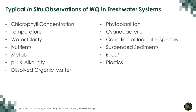Typical in-situ observations of water quality in freshwater systems include chlorophyll concentration, temperature, water clarity, nutrients, metals, pH and alkalinity, dissolved organic matter, phytoplankton species, cyanobacteria, condition of indicator species such as fish or other animals and aquatic plants, suspended sediments, E. coli bacteria, and plastics. All these are collected from water samples and analyzed to diagnose water quality in freshwater lakes.